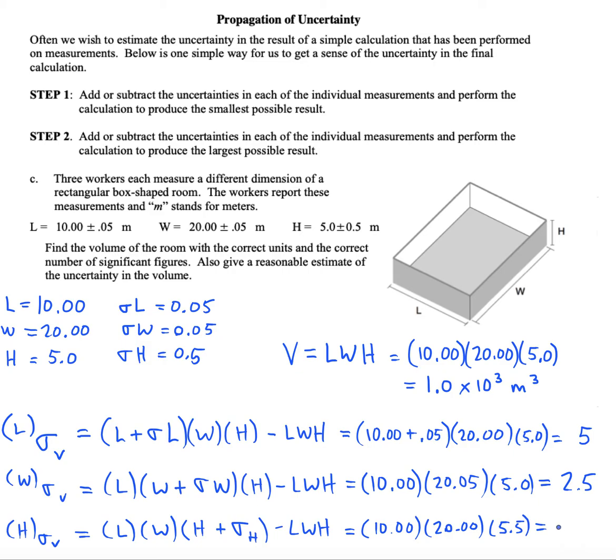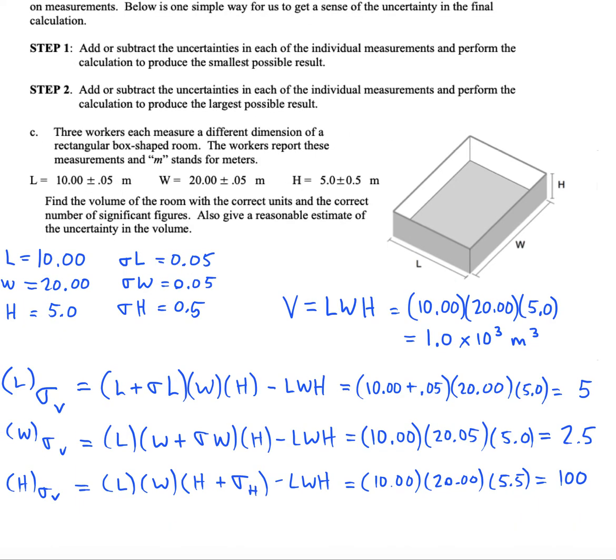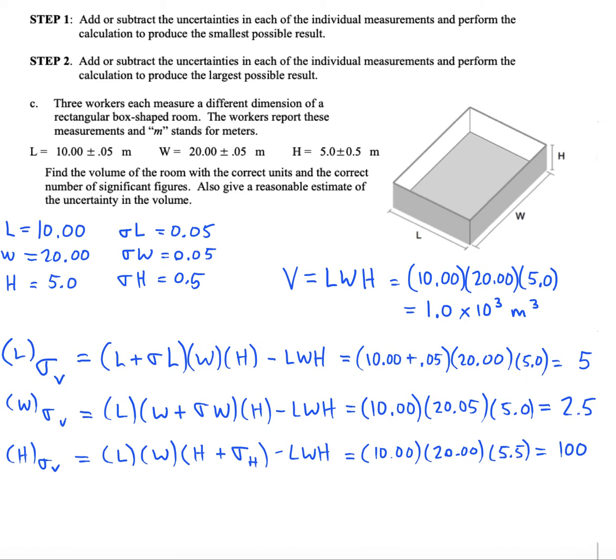It turns out that the height is the largest contributor to uncertainty in our volume. Now this is just an estimate of what the uncertainty could be due to the different measurements. What we have to do now is get the total uncertainty in the volume.